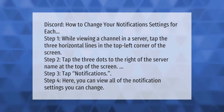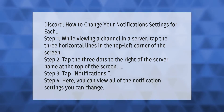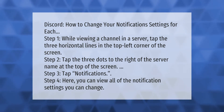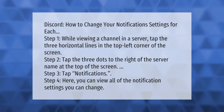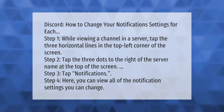Discord: how to change your notification settings for each channel. Step one: while viewing a channel in a server, tap the three horizontal lines in the top left corner of the screen. Step two: tap the three dots to the right of the server name at the top of the screen. Step three: tap Notifications. Step four: here you can view and change all of the notification settings.